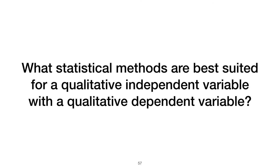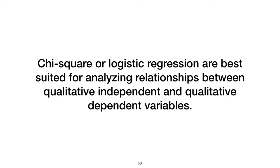What statistical methods are best suited for a qualitative independent variable with a qualitative dependent variable? Chi-square or logistic regression are best suited for analyzing relationships between qualitative independent and qualitative dependent variables.